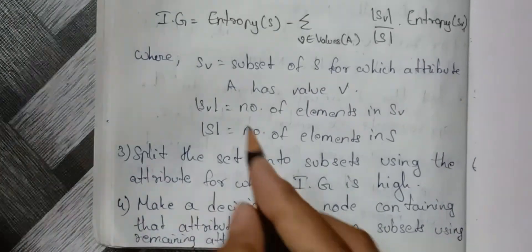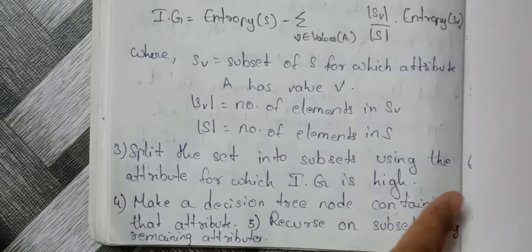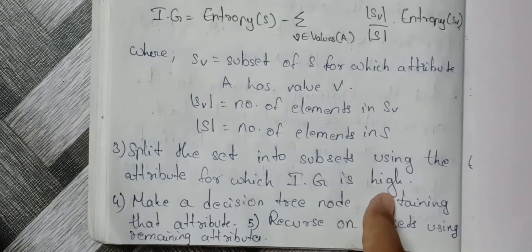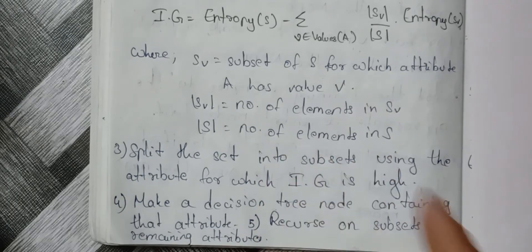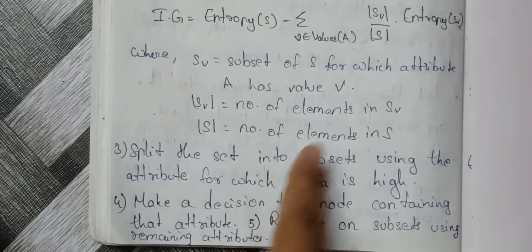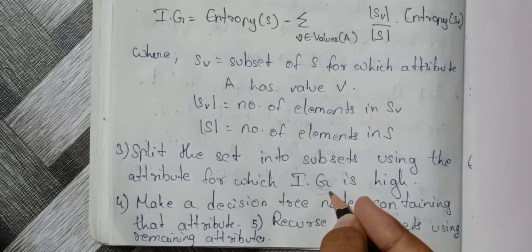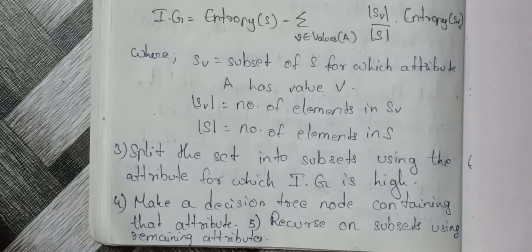Next: first find the entropy, then find the information gain. Split the set into subsets using the attribute for which the information gain is highest. If the information gain of attribute A is high, then we select A as the best attribute.